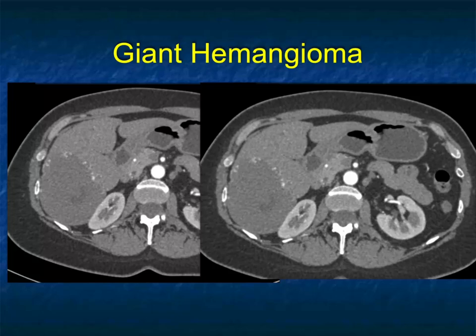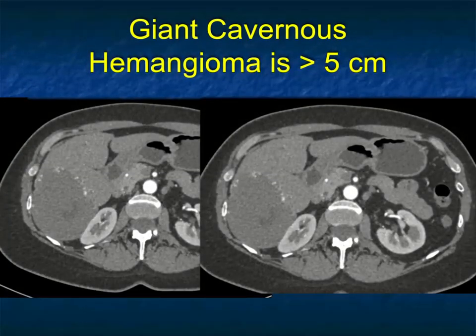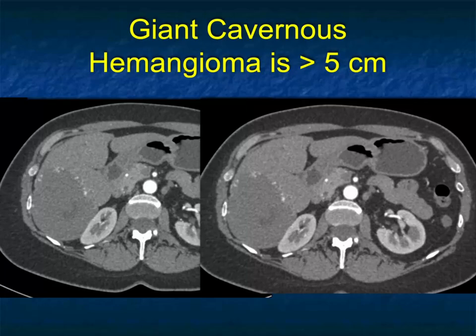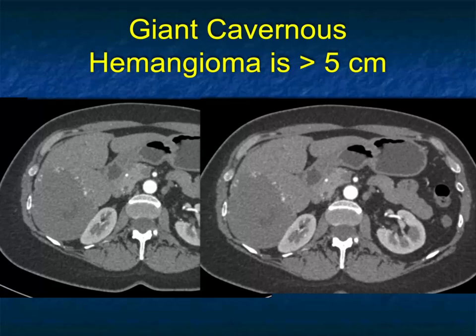In terms of describing hemangiomas, if a lesion reaches five centimeters, which is not uncommon, it's called a giant hemangioma. Looking at this first case, you see a lesion in the right lobe of the liver, and on arterial phase imaging you see peripheral enhancement — like a puddling — with some central scarring. You also notice the liver is not cirrhotic, which is important. Hemangiomas are essentially blood pool collections. When you have cirrhosis, hemangiomas will collapse and won't be visible. If you see a vascular lesion with peripheral enhancement in a patient with cirrhosis, to me that's hepatoma until proven otherwise.